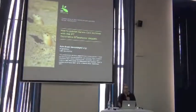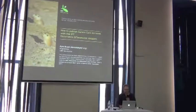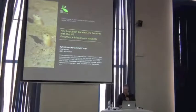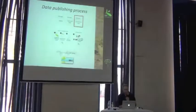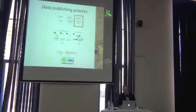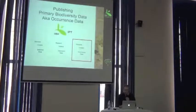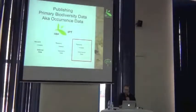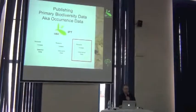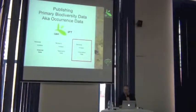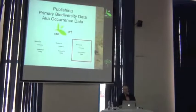Now, data. Two different types: occurrence and taxonomy. How do we publish the data? We're going to start with the occurrence data. You can see it's composed in two parts: the resource metadata and the actual data itself.